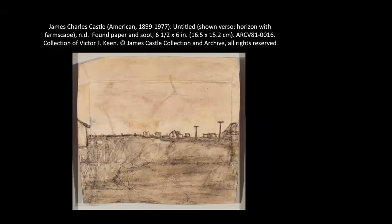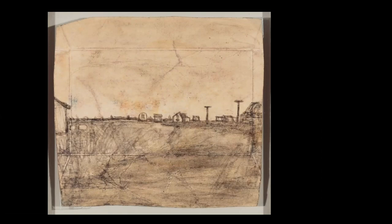American artist James Castle, who was born in 1899 and died in 1977 — we're looking at an untitled work. It's a horizon with a farmscape that is also undated. It was created on found paper with soot, and it measures about six and a half by six inches.